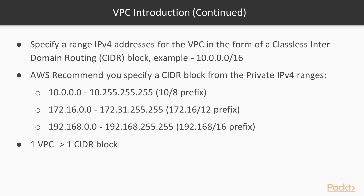When we create a new VPC, we have to specify a range of IPv4 addresses in the form of a Classless Inter-Domain Routing, or CIDR block — for example, 10.0.0.0/16. AWS recommends you specify a CIDR block from the private IPv4 ranges: 10.0.0.0 to 10.255.255.255, or 172.16.0.0 to 172.31.255.255, or 192.168.0.0 to 192.168.255.255.